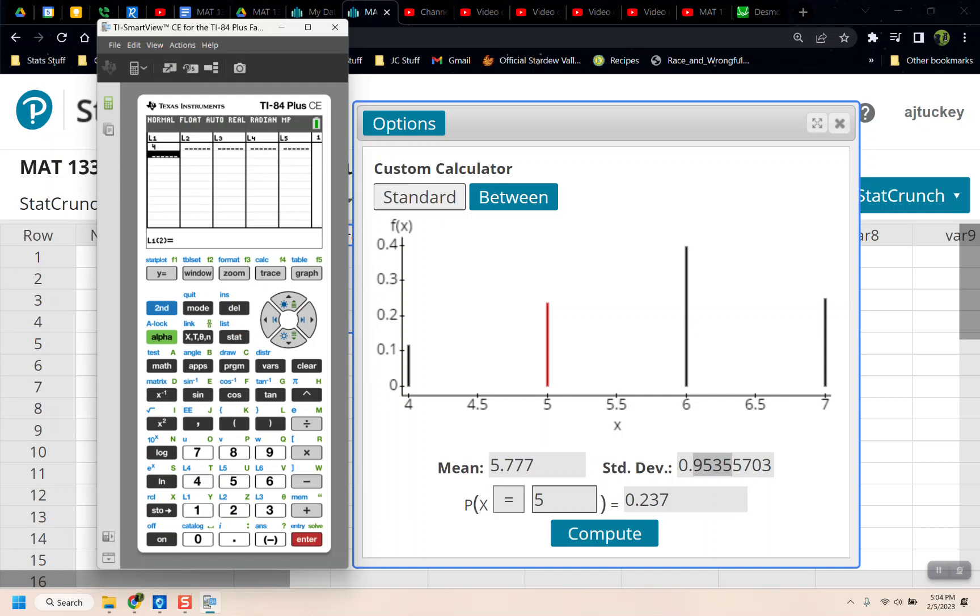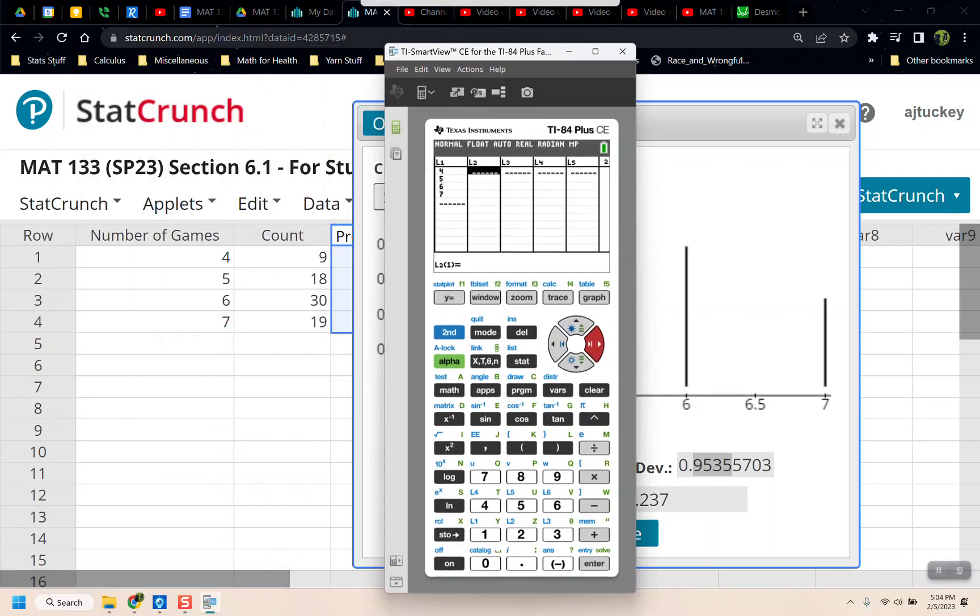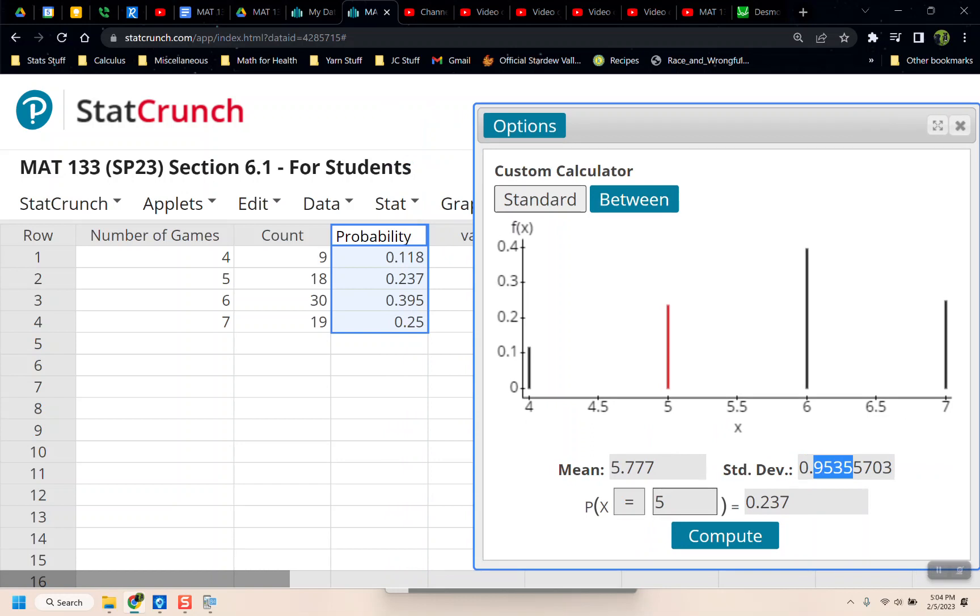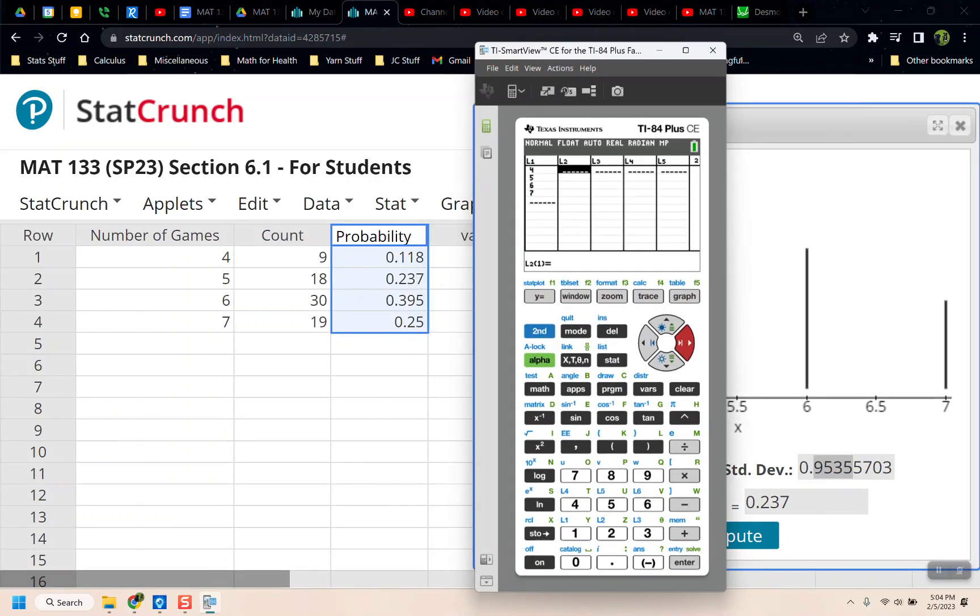and we're going to enter the values from our table. So 4, 5, 6, and 7, and we have to enter those probabilities. So I'm going to move this over so I can see the probabilities, because I don't remember them off the top of my head. All right, it's 0.118, 0.237, 0.3, that's the problem with the calculator, 0.395, 0.25.